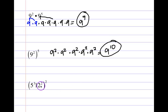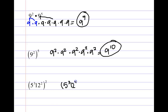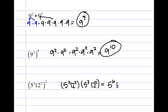Here's another problem that tends to intimidate students. Start on the outside — what is being squared? Five cubed times twelve squared. So I repeat that base a total of two times: five cubed times twelve squared, times five cubed times twelve squared. Now count each base: five appears three plus three — a total of six. Twelve appears two plus two — a total of four. So my answer is five to the sixth power times twelve to the fourth.